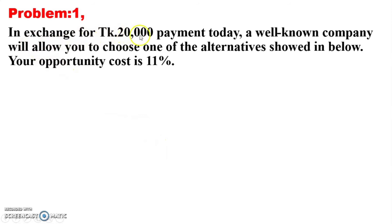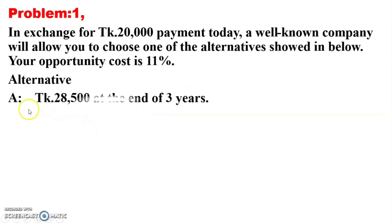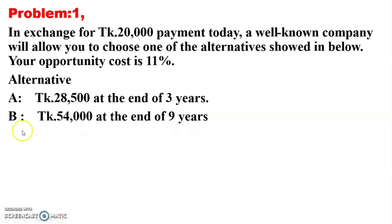Let's go to Problem number one. In exchange for a taka 20,000 payment today, a well-known company will allow you to choose one of the following alternatives. Your opportunity cost is 11 percent. Alternative A: taka 28,500 at the end of three years. Alternative B: taka 54,000 at the end of nine years.